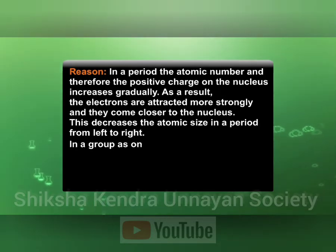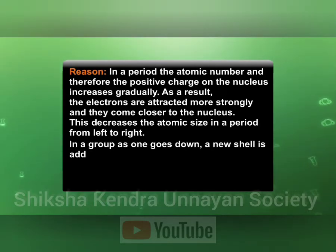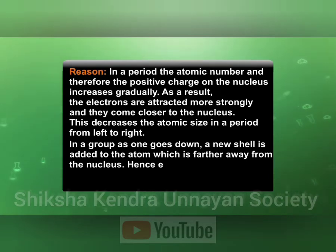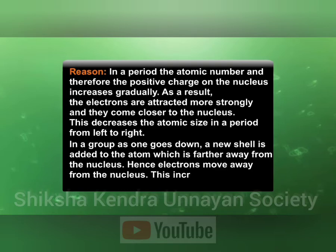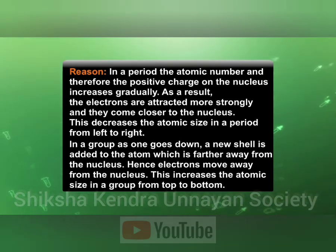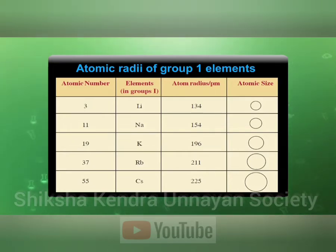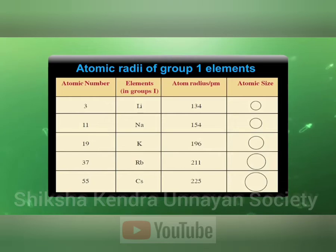In a group, as one goes down, a new shell is added to the atom which is further away from the nucleus, so electrons move away from the nucleus. This increases the atomic size in a group from top to bottom. This table shows the regular increase of atomic size of elements in group 1, from lithium to cesium — as we move from lithium to cesium, atomic size increases. The reason is the regular increase in number of shells.